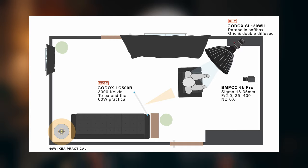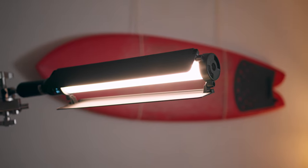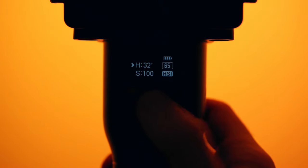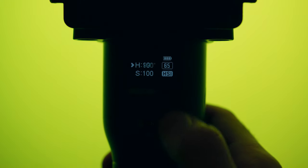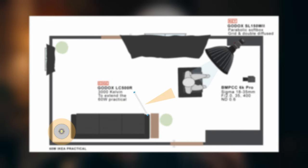Now that we've positioned our key light properly, we can play around with some practicals. A practical is basically a light source present in the frame, like that IKEA lamp for example. I like to see what kind of light the practical creates and if I can use it for a more realistic setting. I used a Godox LC500R — a light stick ranging from 2500 to 8000 Kelvin with a 360 degree range — mounted on a C-stand, extended to fall on my shoulder and face. This is called a rim light, used to separate the talent from the background and create a more three-dimensional, deeper image.